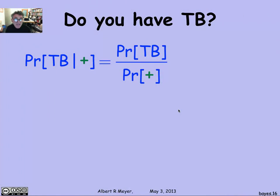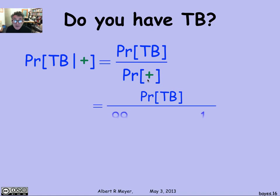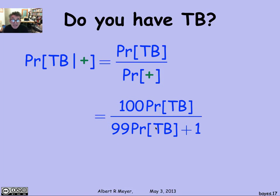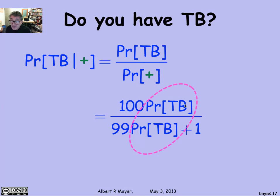We'll come back to this formula. We were working on the probability that you have TB given the test came in positive — we figured out it was a certain quotient, and now we know what the denominator is: 99/100 times the probability of TB plus 1/100. Multiplying numerator and denominator through by 100, the probability that you have TB given the test says you do is 100 times the probability of TB divided by 99 times the probability of TB plus 1. The key unknown is the probability that a random person in the population has TB.